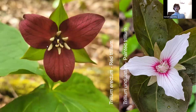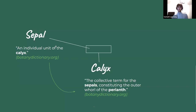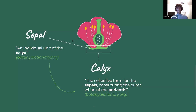Then you have the sepals, the individual units of the calyx — the last part we're going to look at today. A pattern you're seeing here is that there are so many words, but sometimes it's just a compound version of another word. With the sepal and the calyx, you have the compound version being the calyx; the compound version of the petals is the corolla. Words might look like different things, but they're just the collective plural version.